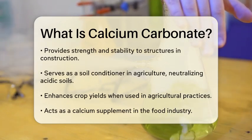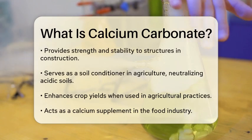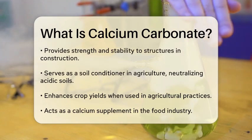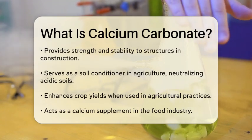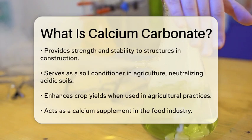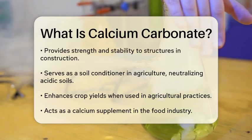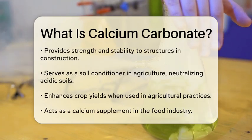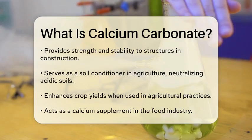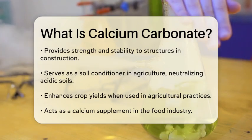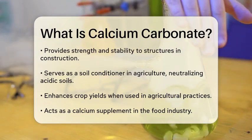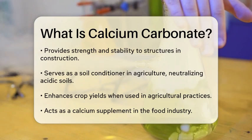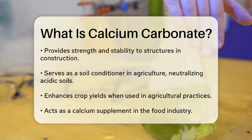In the construction industry, calcium carbonate is used as a primary ingredient in cement and concrete. It provides strength and stability to structures. In the agricultural sector, it serves as a soil conditioner, helping to neutralize acidic soils and improve crop yields.